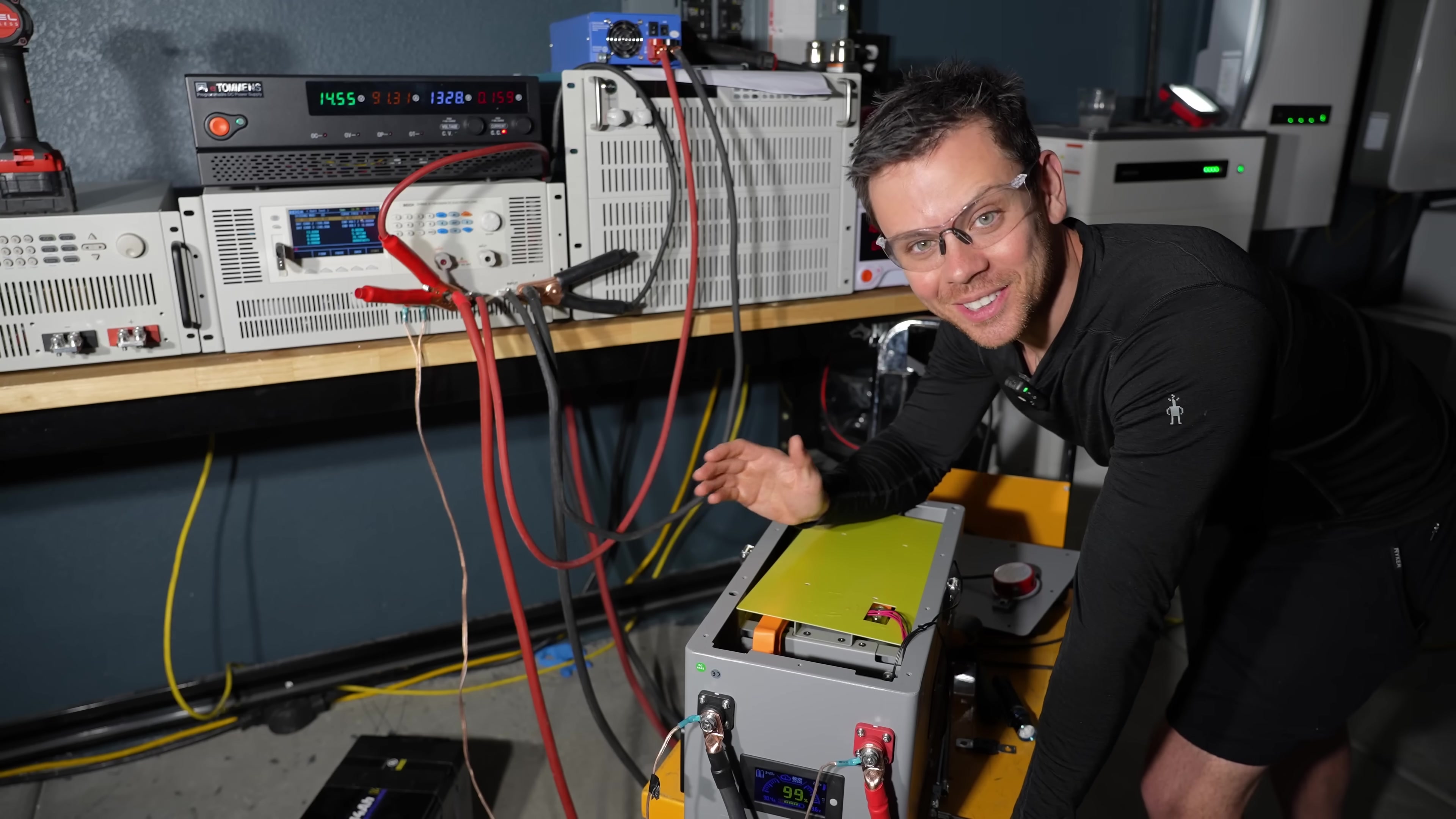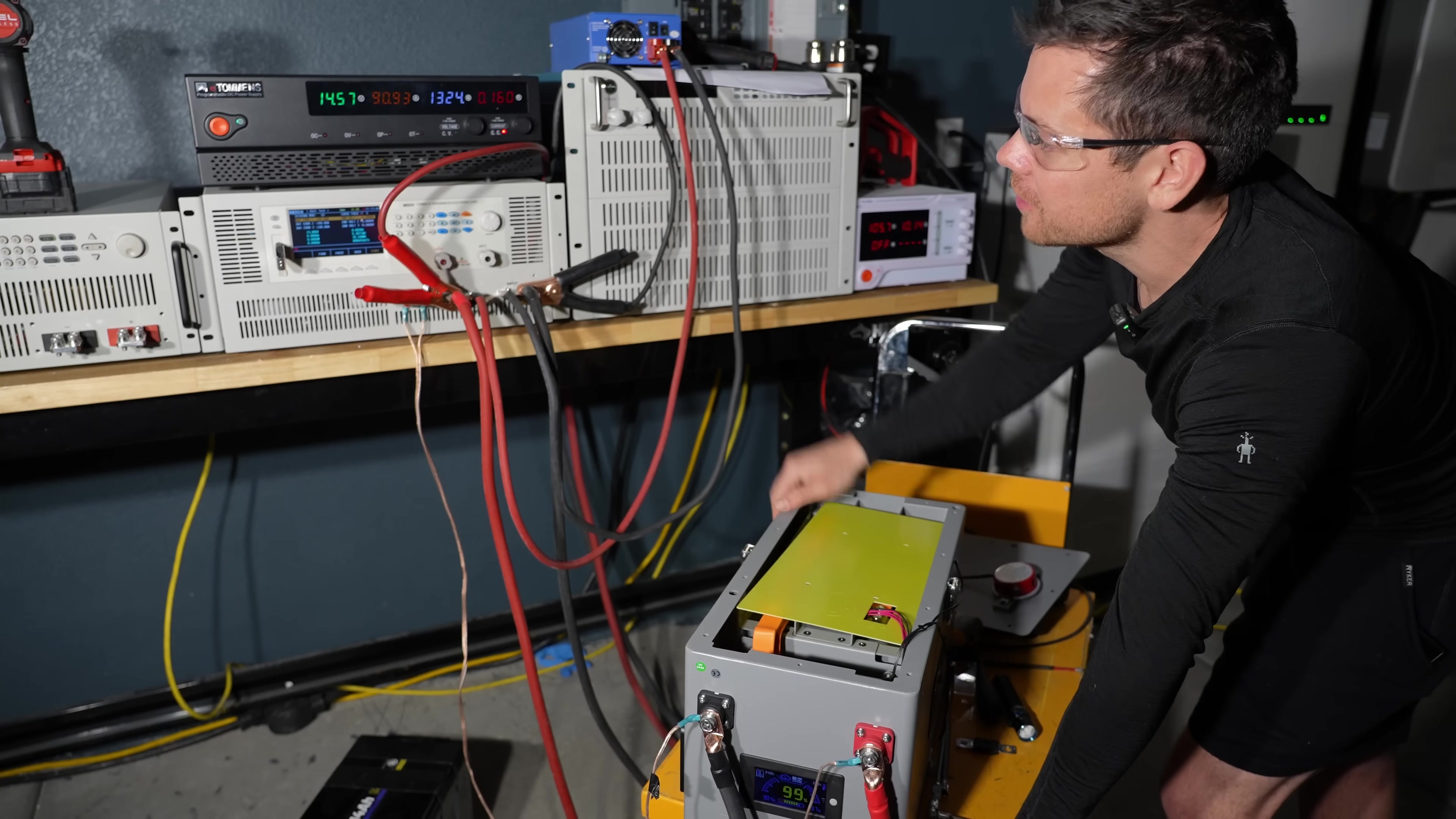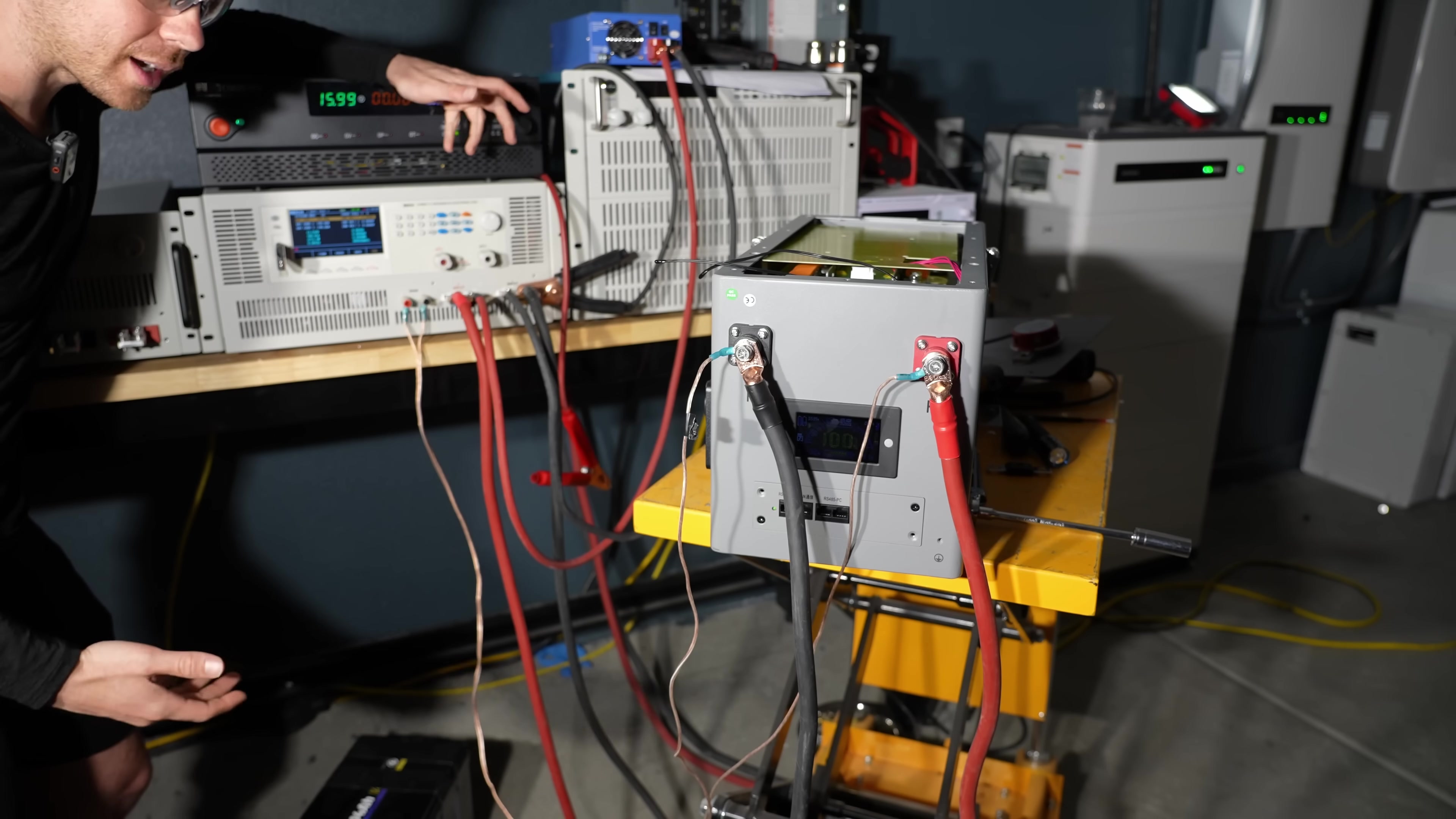Now we're finally going to do a load test. It's rated for 200 amps. So we're going to draw that as long as possible and see if we can pull full capacity. But first we're going to go to high voltage disconnect. Now it's fully charged and we are at 100%. So here's 200 amps continuous and we'll come back in about two hours.